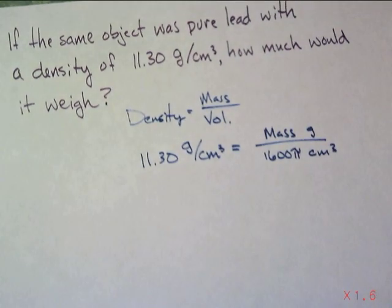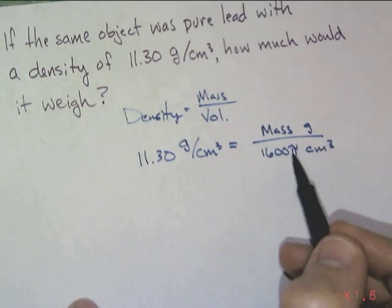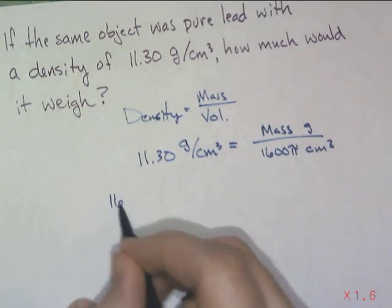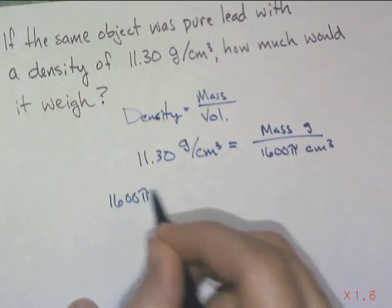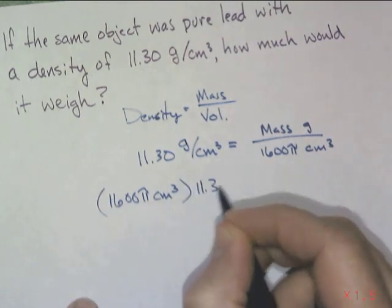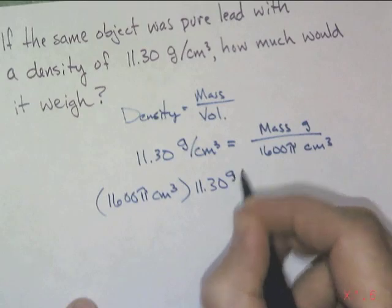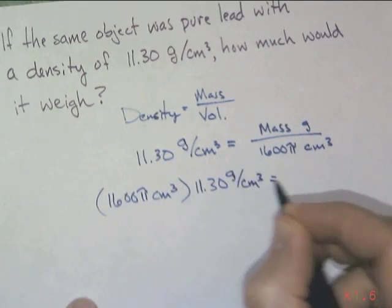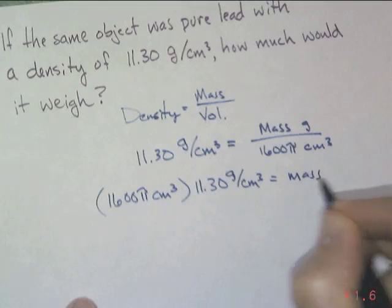And that will be in grams. To solve for this, we would multiply both by 1,600 on this side, π, and that's centimeters cubed. And there's 11.30 grams per centimeter cubed, and that's going to equal to the mass in grams.